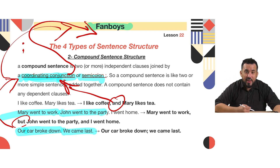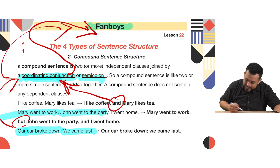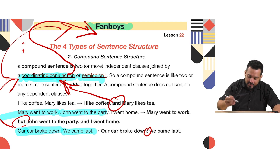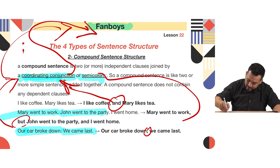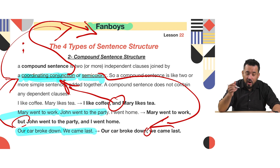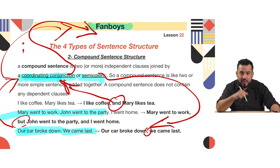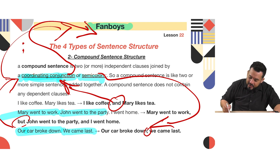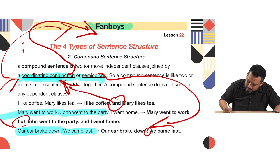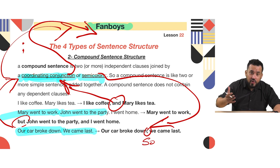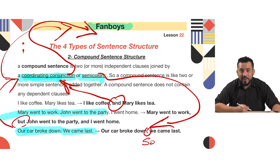Now let's put them together and make a compound sentence. We can use a semicolon: 'Our car broke down; we came last.' Or we can use a FANBOY — we can say 'Our car broke down, so we came last.' 'So' is a coordinating conjunction, which is another FANBOY.